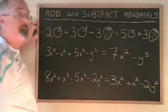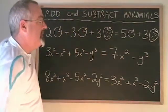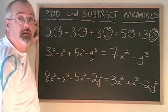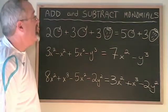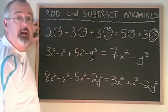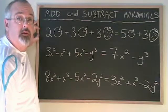Our final answer is three x squared plus x cubed minus two y squared. This is how you add and subtract monomials in a high school polynomial.